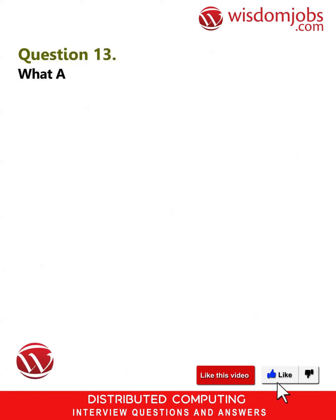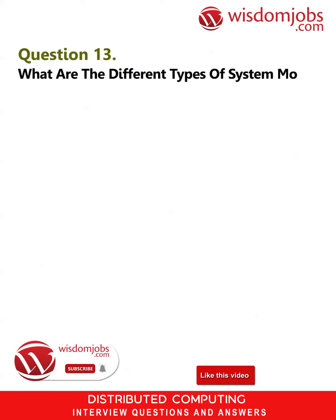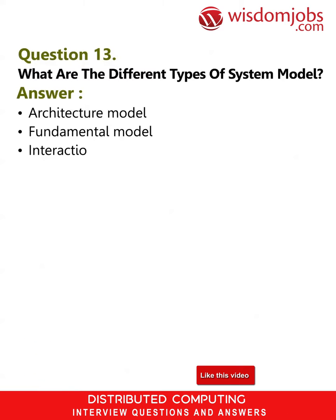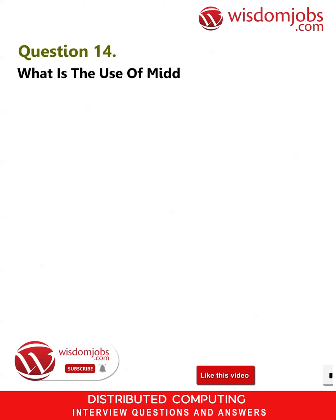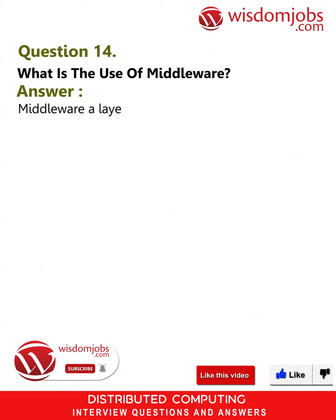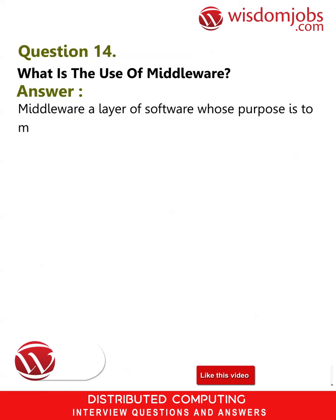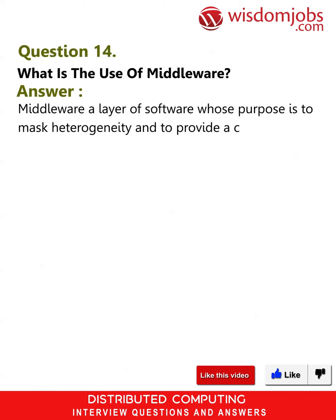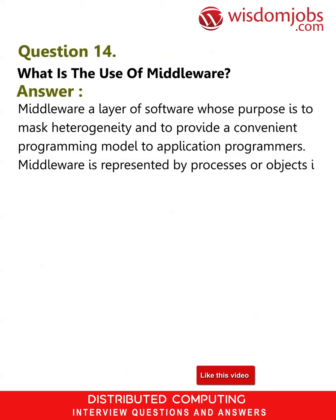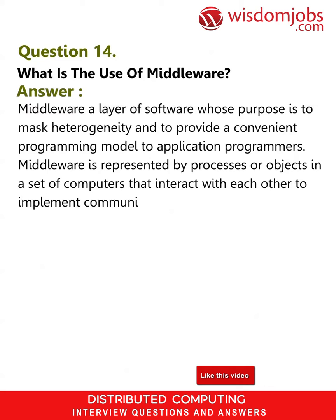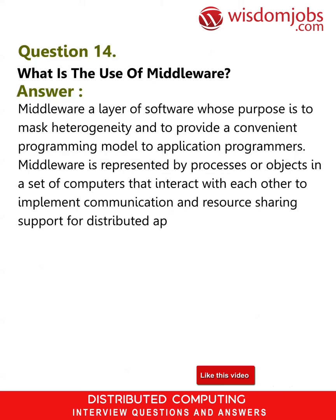Question 13: What are the different types of system model? Answer: Architecture model, fundamental model, interaction model, failure model, security model. Question 14: What is the use of middleware? Answer: Middleware is a layer of software whose purpose is to mask heterogeneity and to provide a convenient programming model to application programmers. Middleware is represented by processes or objects on a set of computers that interact to implement communication and resource sharing support for distributed applications.